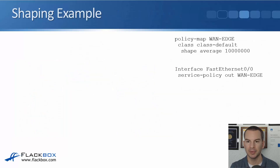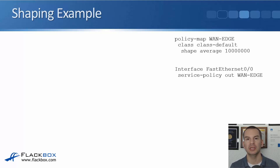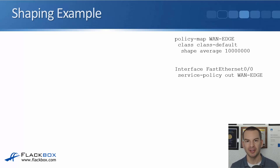We configure a policy map — I've called it 'one-edge' — with class class-default and shape average to 10 megabits per second. No class maps are needed because the shaper is applied to all traffic. Then we apply it to the interface with a service policy: interface FastEthernet 0/0, service-policy out one-edge, on both CE routers on the outside interface facing the provider. Now all traffic is shaped to 10 megabits per second, so the provider will not drop any traffic.